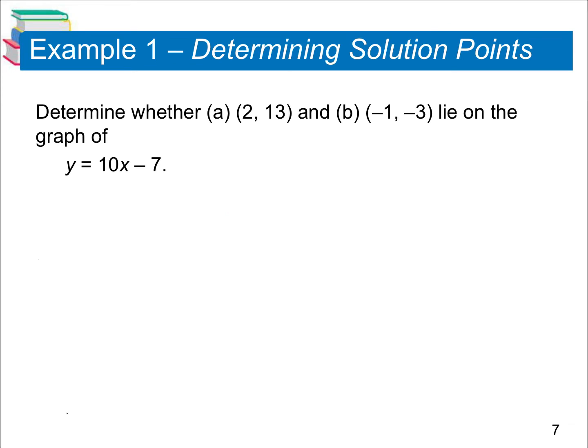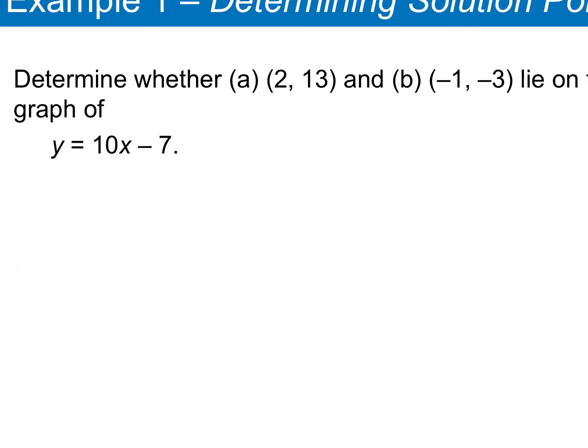Section 1.1 starts by going over graphing functions. The first thing we're going to look at is whether or not an ordered pair is part of the graph. You'll be given an equation and an ordered pair; plug in the x for x and the y for y and simplify. If you get a true statement, that ordered pair lies on the graph. If you get a false statement, it does not.